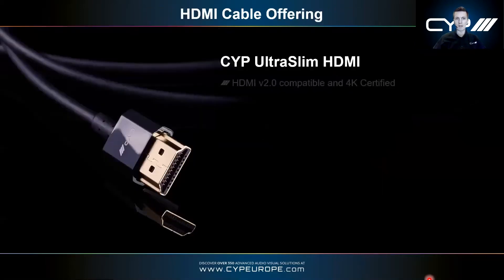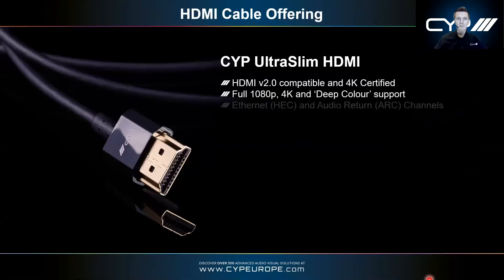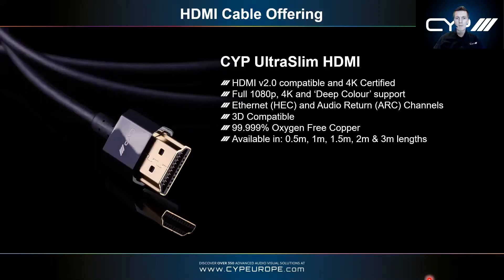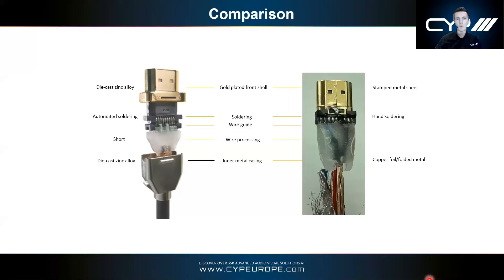We also have ultra slim HDMI cables with incredibly small heads and a slim profile cable. These can carry 4K but haven't gone through the same premium certification process. They go from 0.5m up to 3m. The wiring precision inside these cables is key — the short distance from the main cable out to the connectors reduces EMI, along with high-precision soldering.